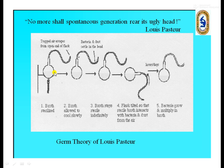In the first experiment, he did this with a sealed flask. In the second experiment, he again took another flask with the same S-shaped neck, filled it with sterilized nutrient broth, but opened this opening — this part of the neck.